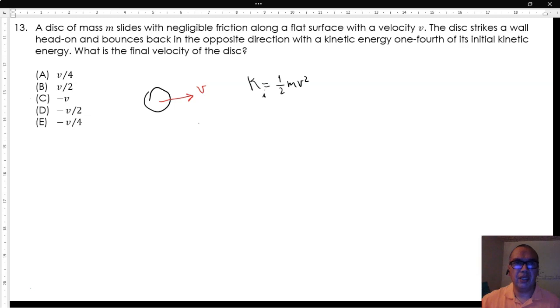Solving for the speed gives us the square root of twice the kinetic energy divided by the mass.